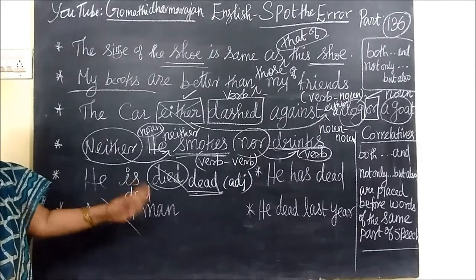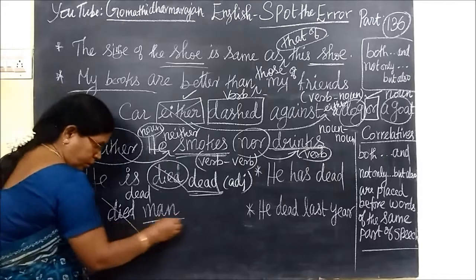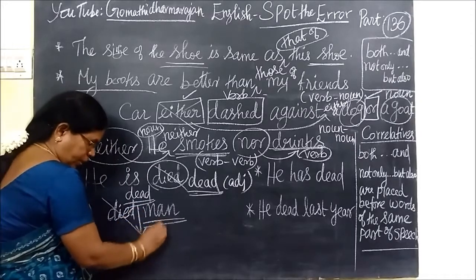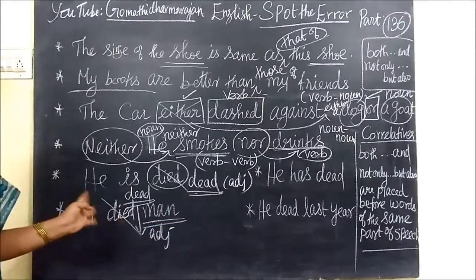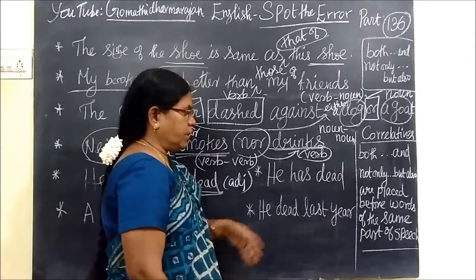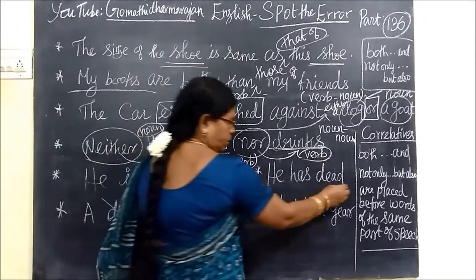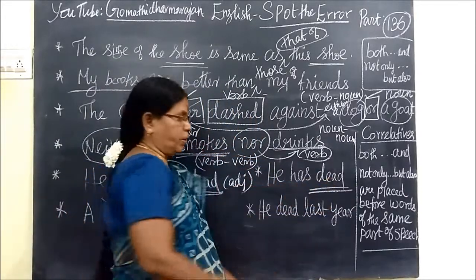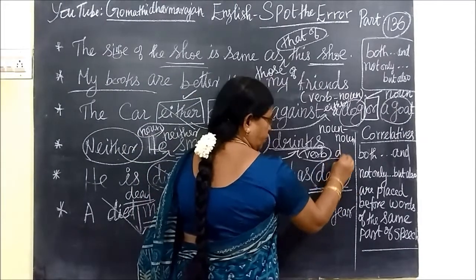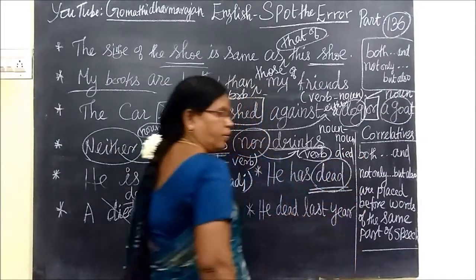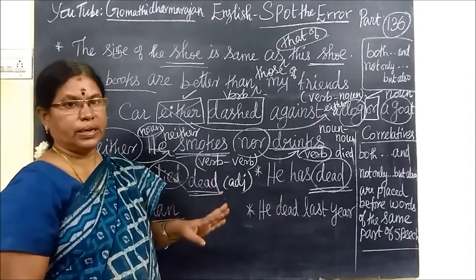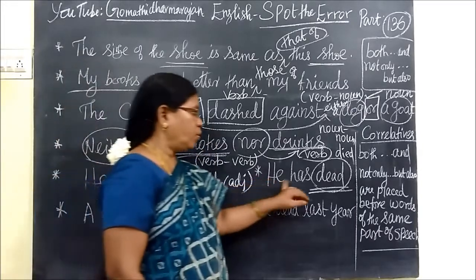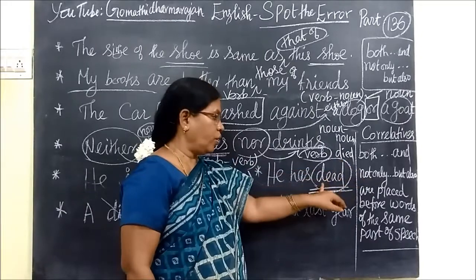Dead man — 'man' is a noun, so 'dead man' uses 'dead' as an adjective. 'Dead' is an adjective. He has a dead — this adjective use is clear. You are using the past participle of the verb 'die': D-I-E. Present tense 'die', past tense 'died', past participle 'died'. So he has died — D-I-E-D, not dead.